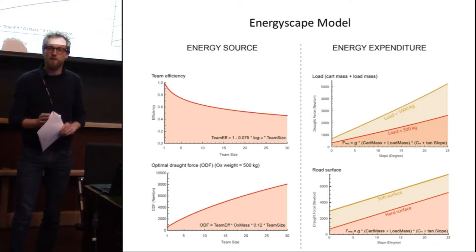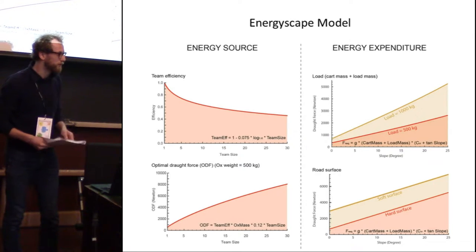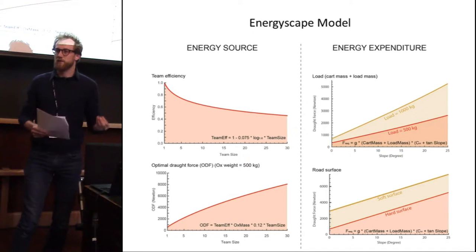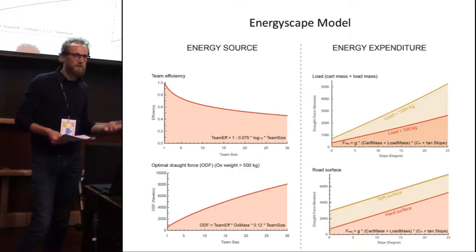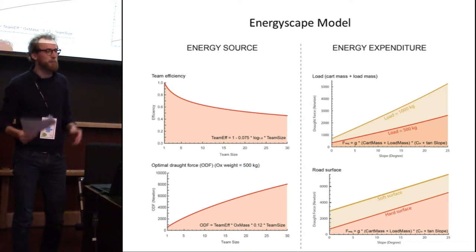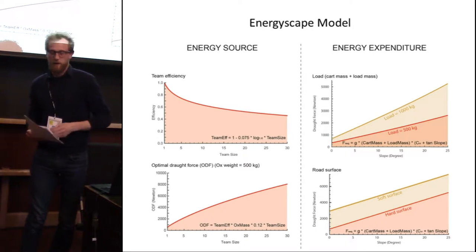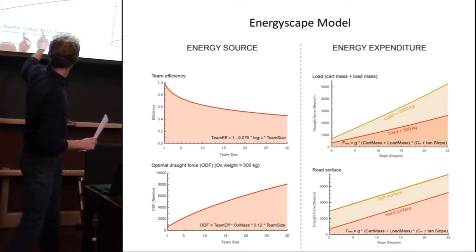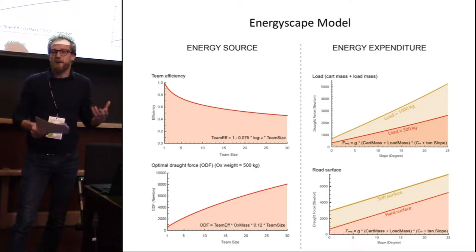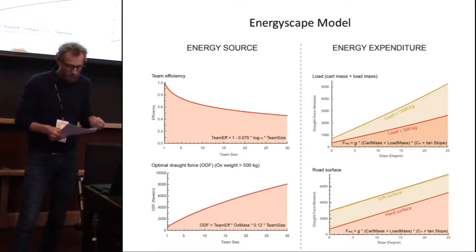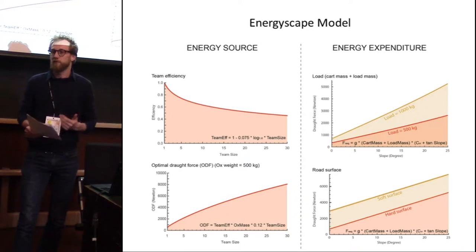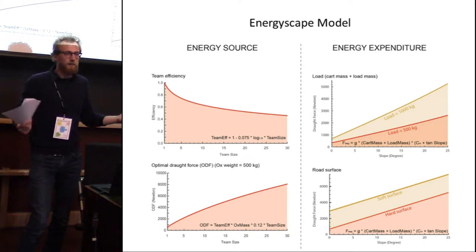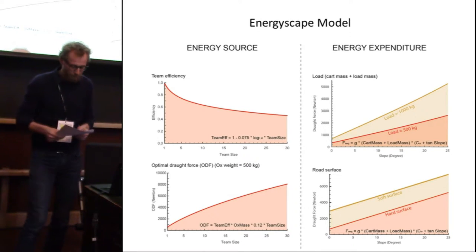This does not mean transport was limited to what one ox could move. Increasing the number of animals in a span increases the total draft capacity of the team. However, this is not by a constant amount — the more animals you add, the less each one individually contributes due to a loss of efficiency from coordination problems. This is what you see in the bottom-left graph. Theoretically, any load can be moved using oxen, as long as the team is large enough. We can see this, for example, with the massive columns of the Pantheon in Rome, which required a team of no fewer than about 20 oxen.